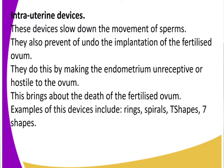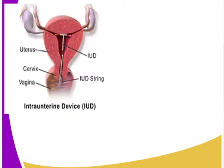That is why we call them intrauterine - they have been inserted into the uterine walls. Examples of intrauterine devices include rings, spirals, T-shapes, and seven-shapes. Let us look at some of these - that is the IUD, the intrauterine device.